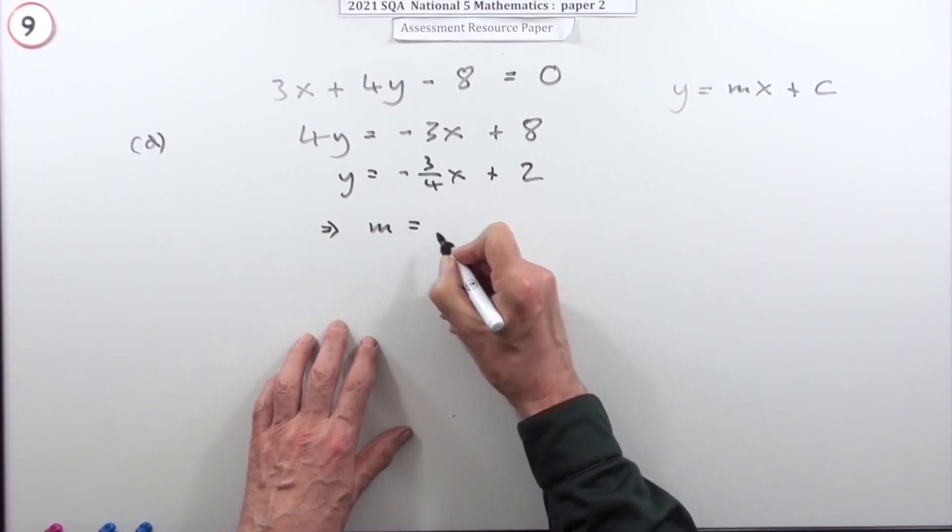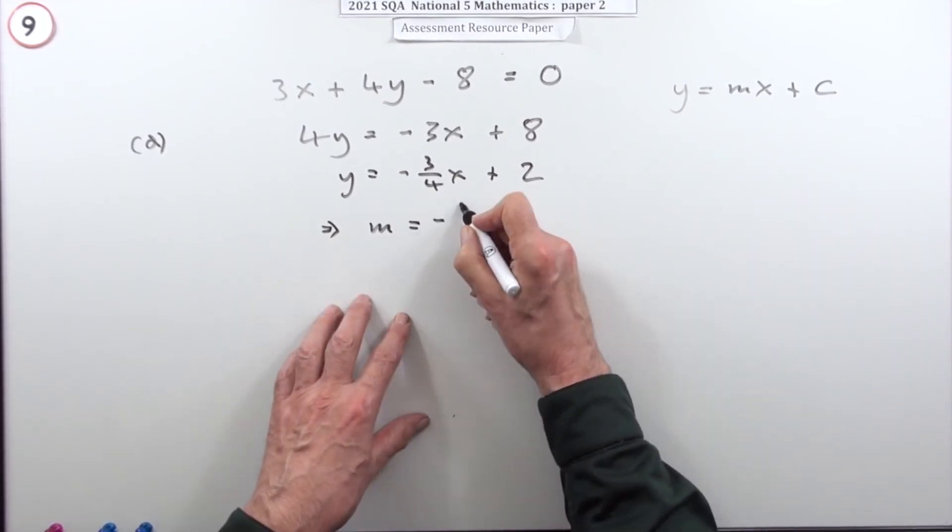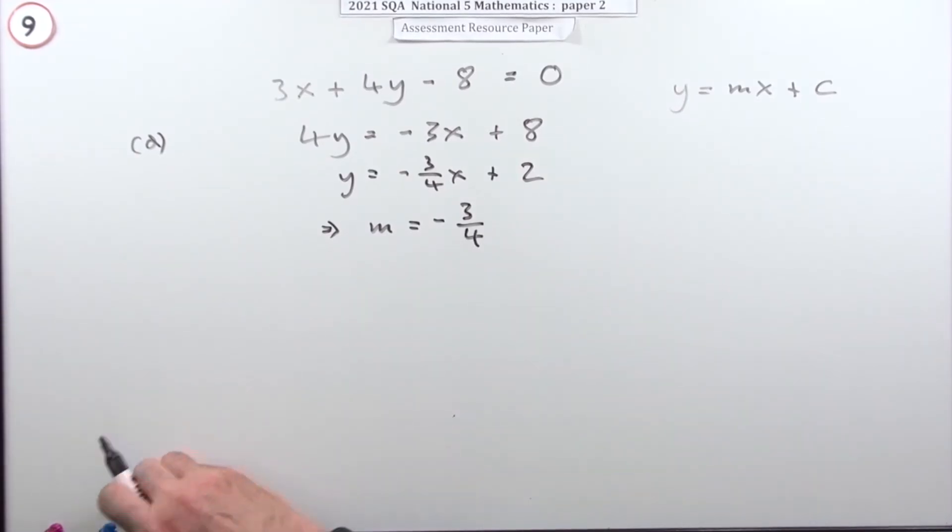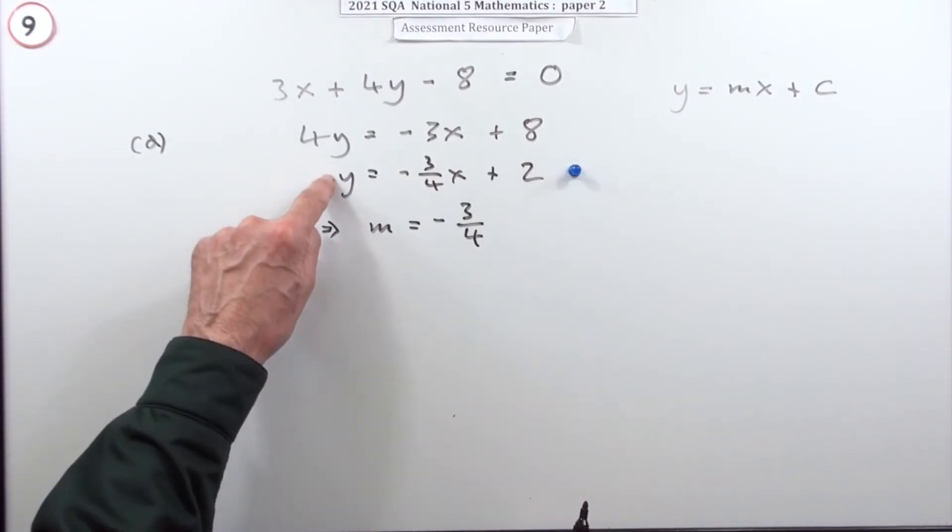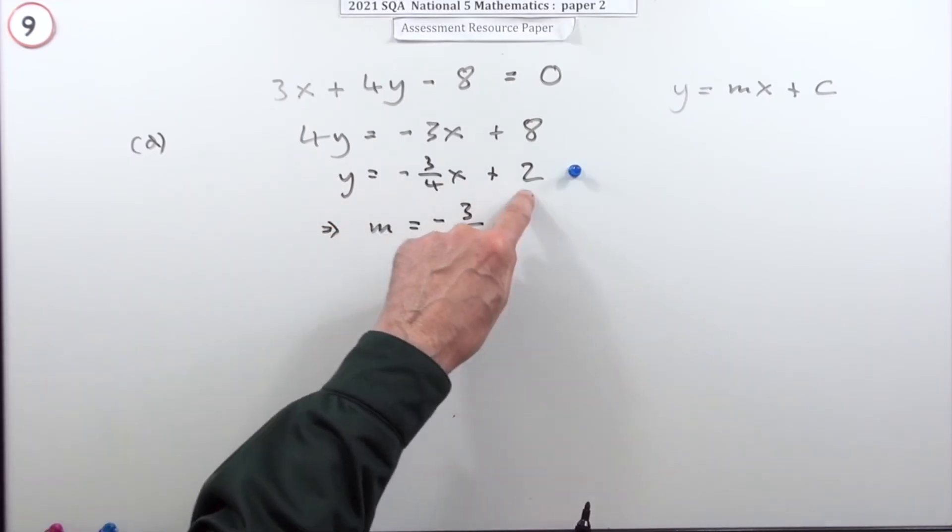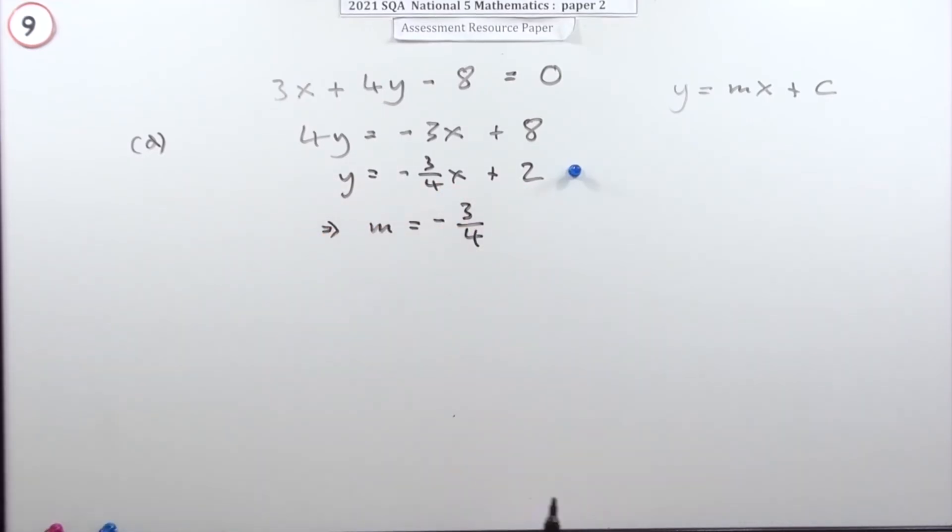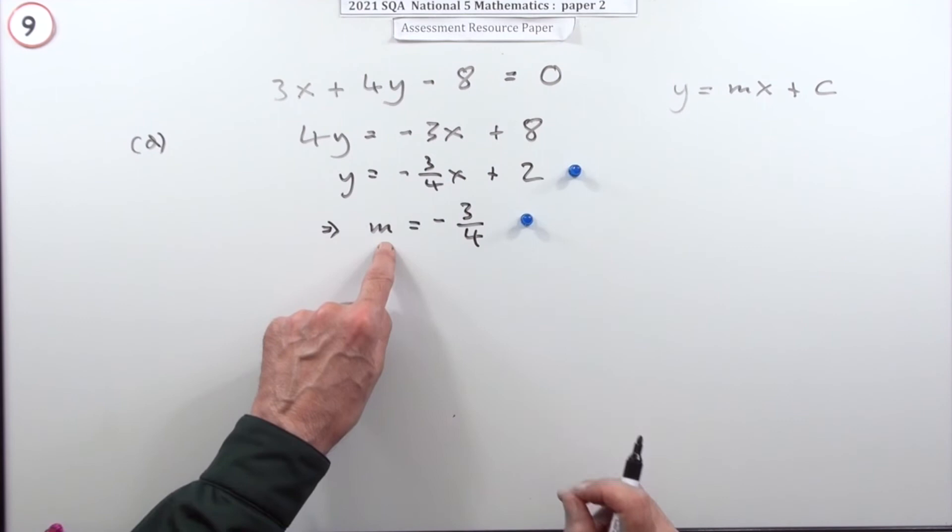There's the equation of the line. From that, by comparing it to y equals mx plus c, you can state that the gradient of the line is negative three quarters. There was a mark for getting into that form showing those features of the line, and then a mark for picking that out.